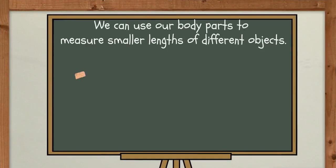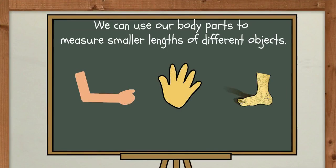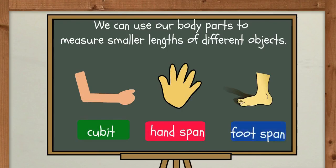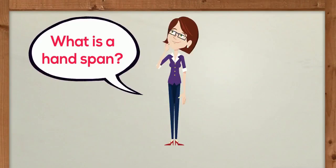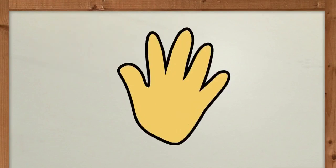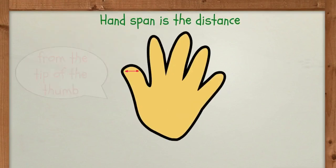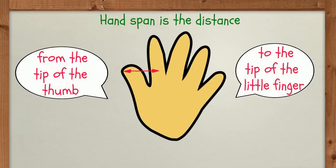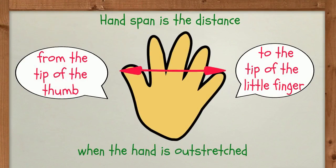We can use our body parts to measure smaller lengths of different objects such as cubit, handspan, and foot span. What do you mean by handspan? Handspan is the distance from the tip of the thumb to the tip of the little finger when the hand is outstretched.